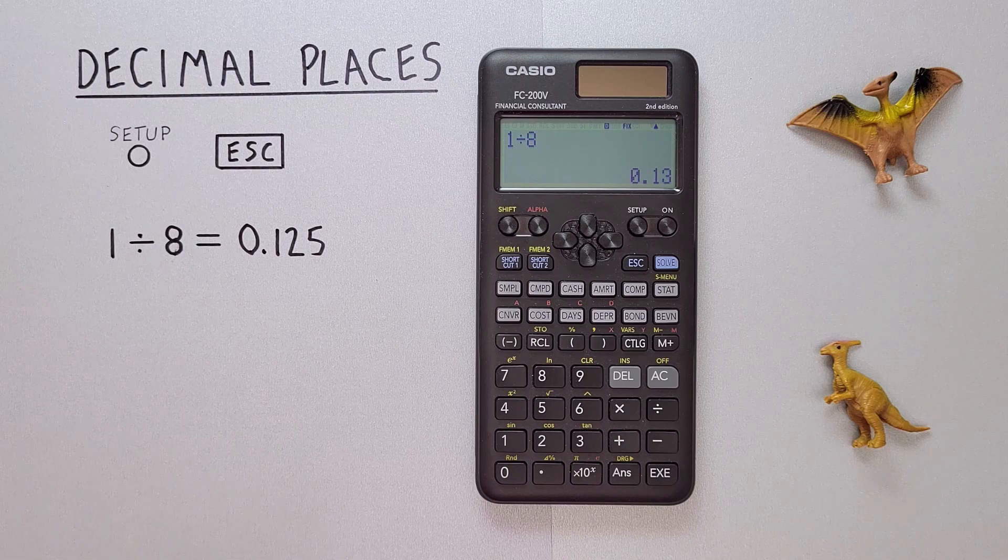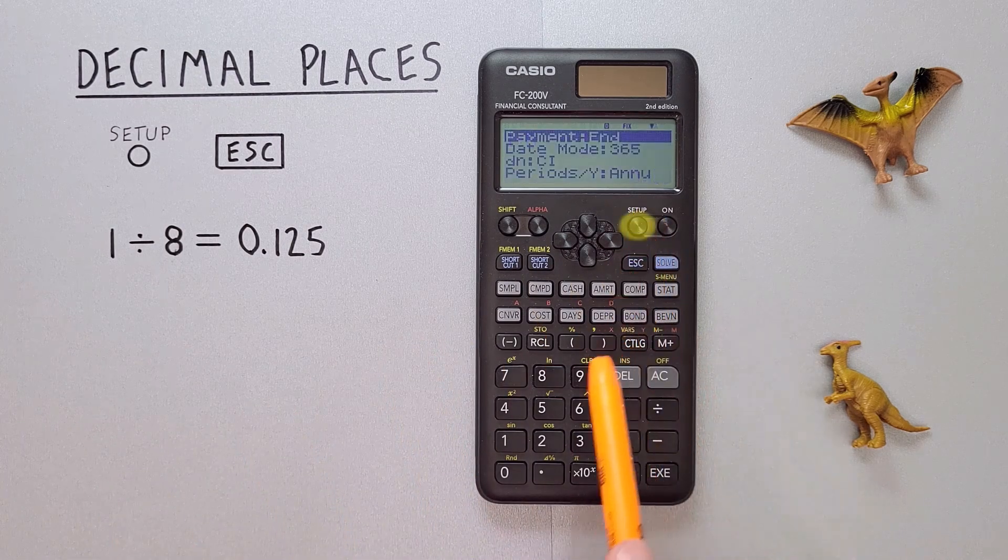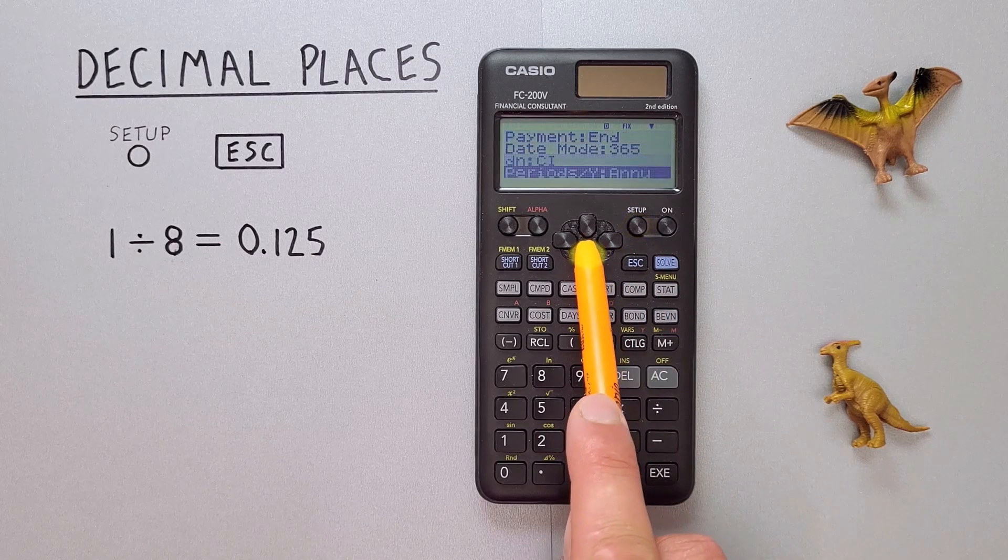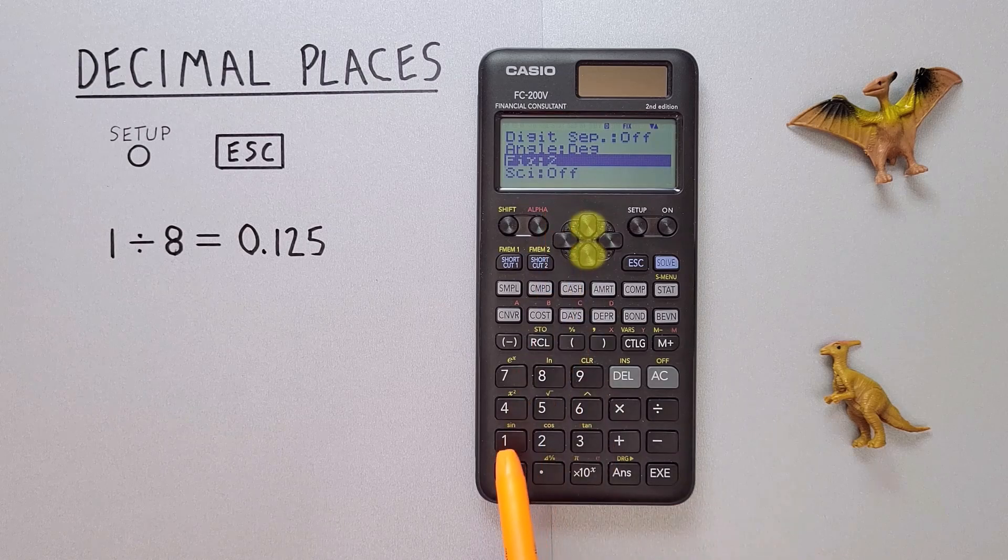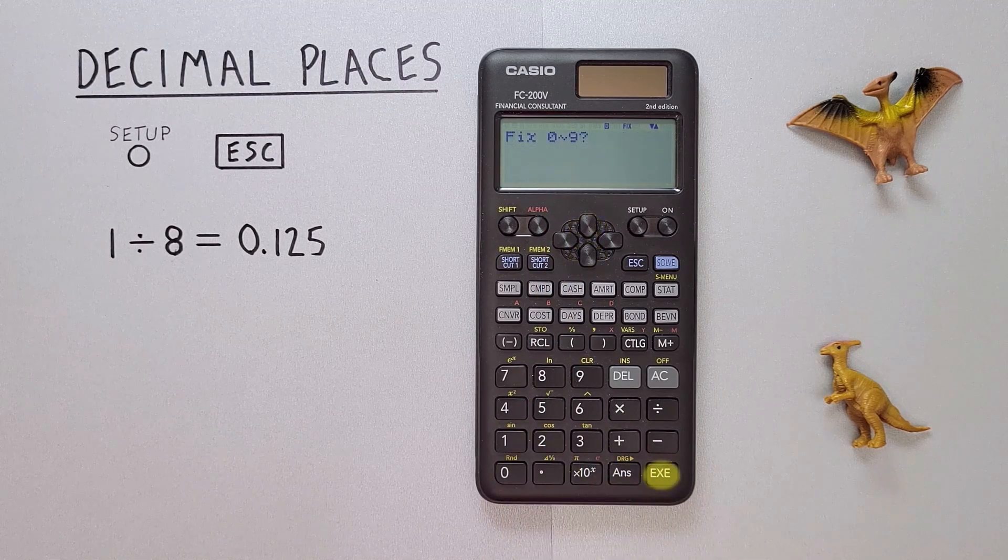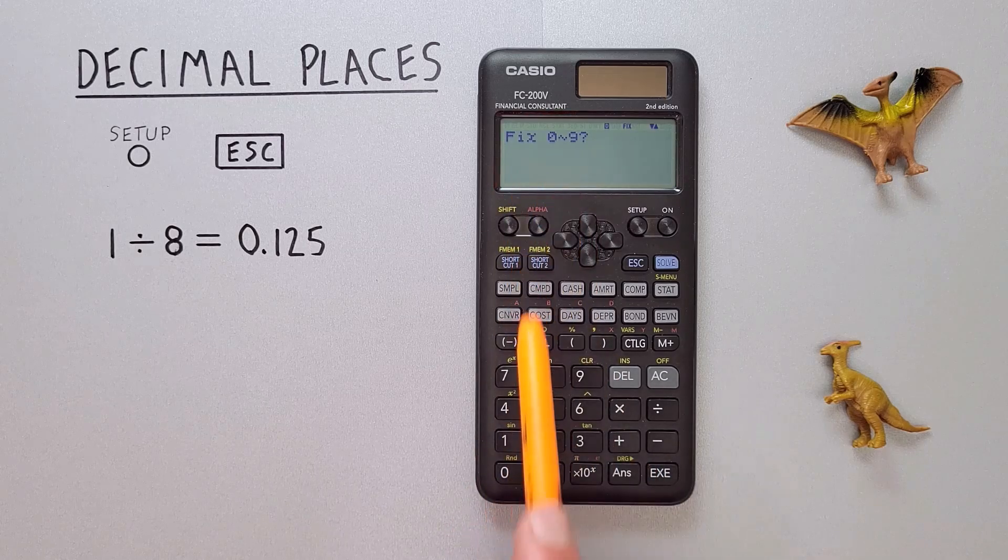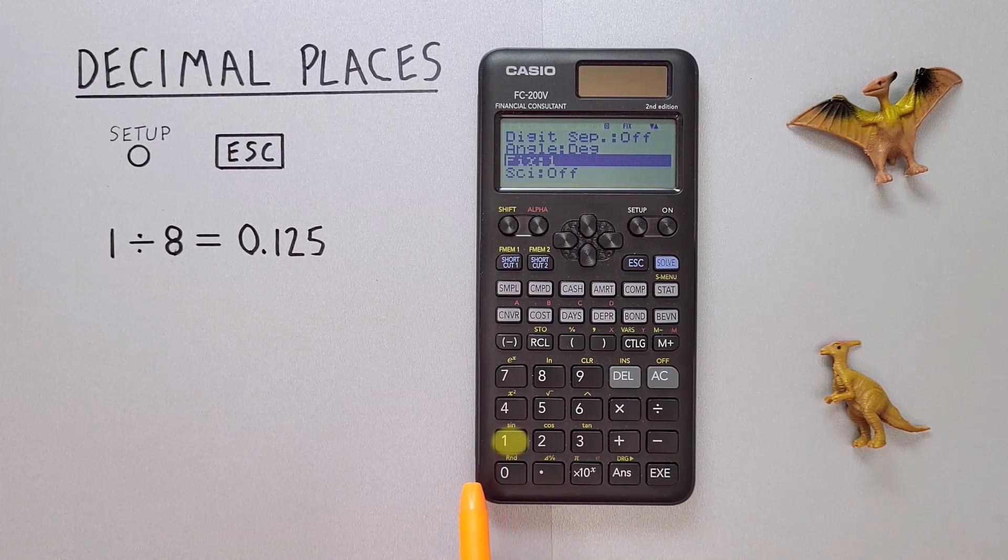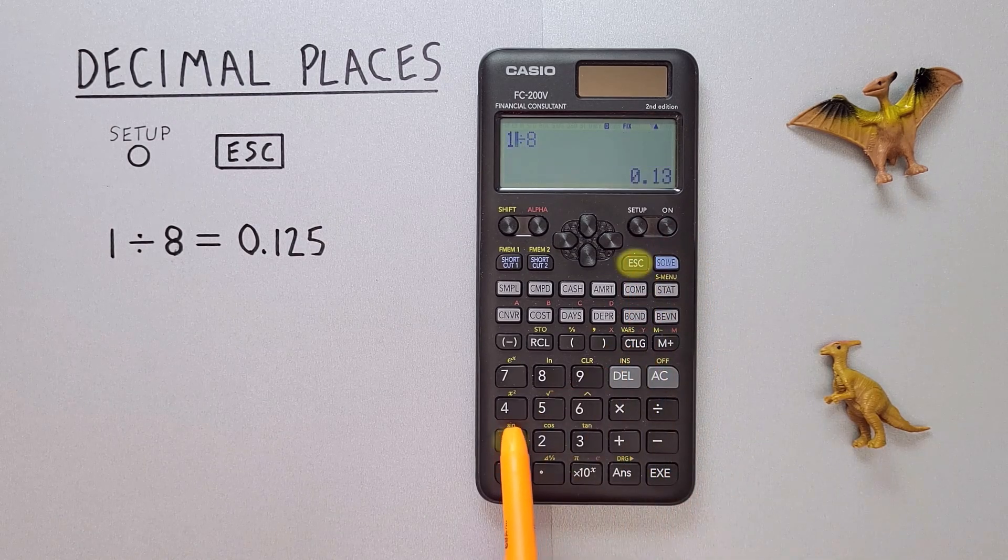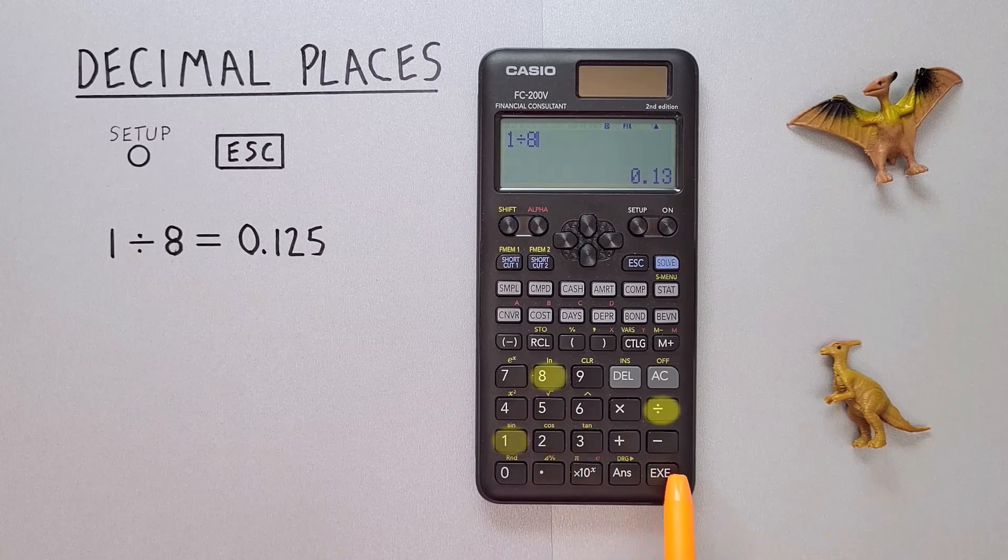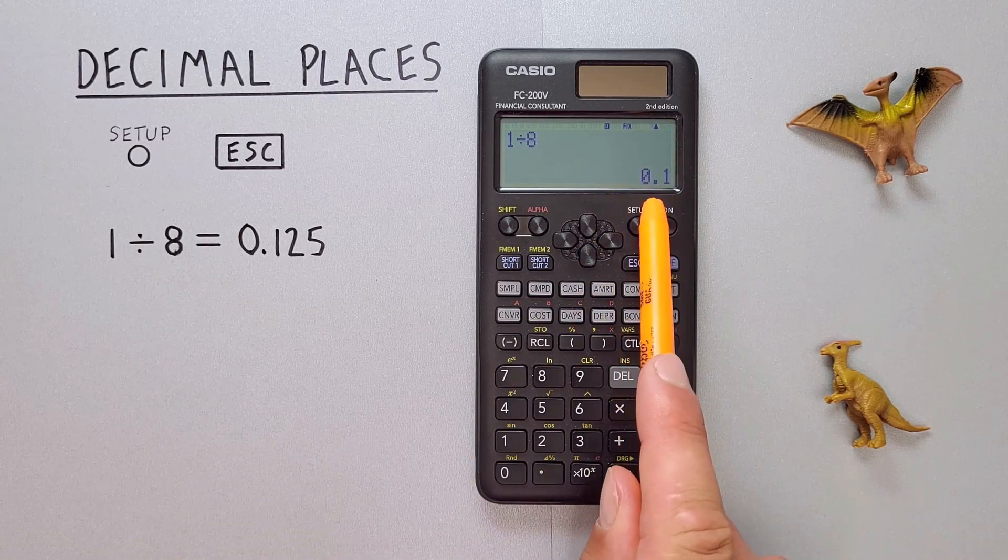If you want to get it to one decimal place we do it the same way. We can go Setup, scroll down to Fix, select it, and we see we can choose between 0 and 9 decimals. If we wanted 1, we just press 1, Escape, and now we go 1 divided by 8 and our answer has been rounded to one decimal place.